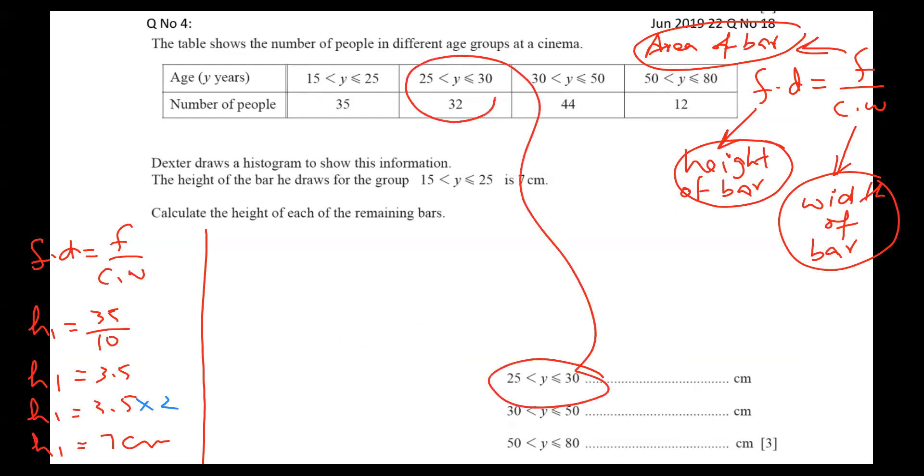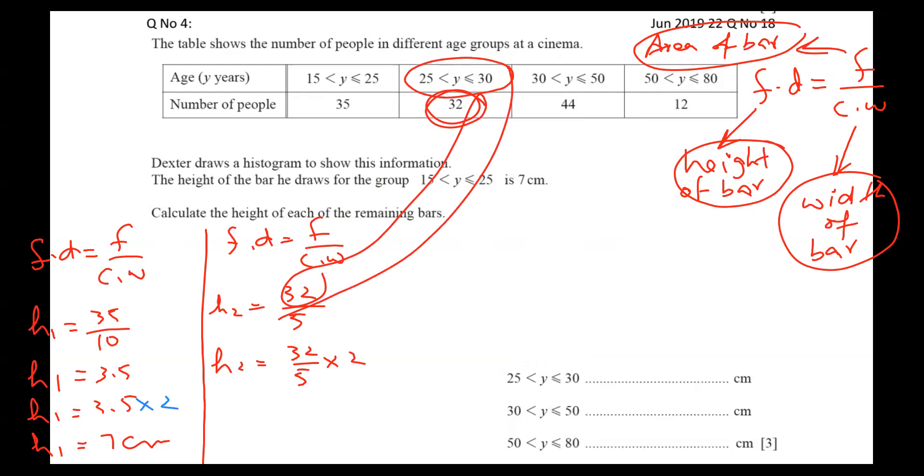How to find 25 to 30? Formula is very clear: frequency density equals frequency by class width. Height number 2, frequency for height number 2 is 32. So 32 by class width is the difference of these numbers, 30 minus 25 becomes 5. But this is not my answer. After getting this value, I will simply multiply by 2. Repeat again: frequency is 32, gap is 30 minus 25 is 5. But this is not our answer. Because I got a criteria throughout the question, we'll multiply into 2. So 32 by 5 into 2, and I got the value 12.8. So height 2 is 12.8.